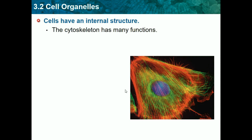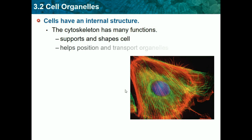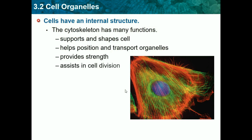One organelle is called the cytoskeleton and it has many functions. It supports and shapes a cell, helps position and transport goods, provides strength, assists in cell division, and aids in cell movement.